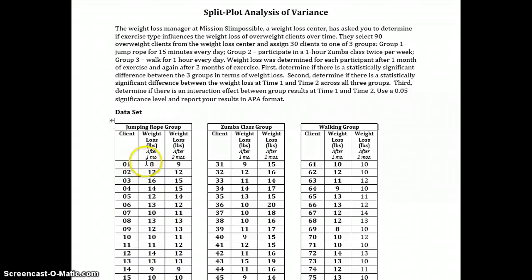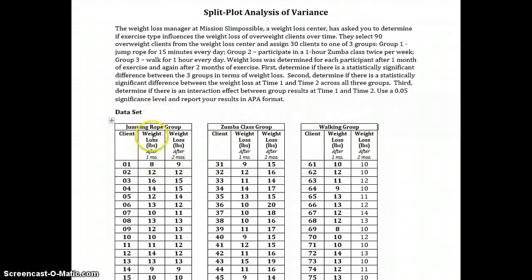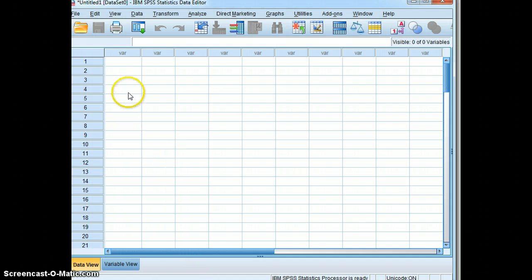Our dependent variable is weight loss at time one and time two. We actually have two independent variables: exercise type with three levels — jumping rope group, Zumba class group, and walking group — and time as a second independent variable with two levels: weight loss after one month and weight loss after two months. So let's go to our SPSS file.